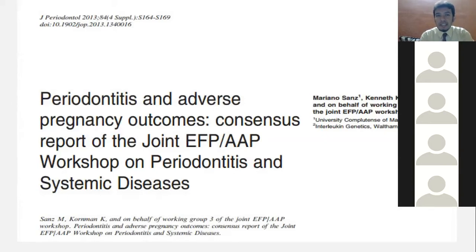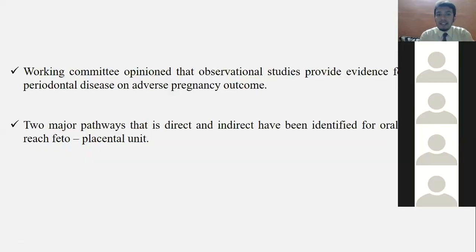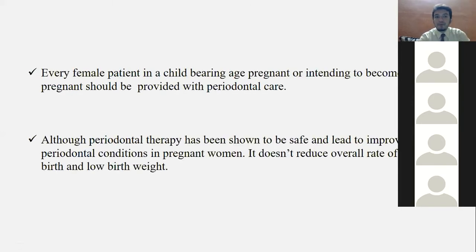The last major consensus meeting in 2013 produced the report 'Periodontitis and Adverse Pregnancy Outcomes' from the joint European Federation of Periodontology and American Academy of Periodontology workshop on periodontitis and systemic disease. The working committee's opinion is that observational studies provide evidence of both direct effects — bacteria entering the placenta and amniotic fluid — and indirect effects. Guidance states that females of childbearing age intending pregnancy should receive prenatal counseling and periodontal therapy if they have existing disease.